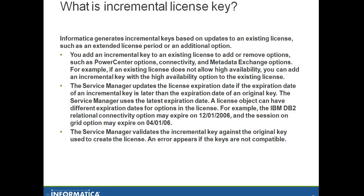The service manager updates the license expiration date. The expiration date of an incremental key is later than the expiration date of the original key, and the service manager uses the latest expiration date. A license object can have different expiration dates for options in the license. For example, the IBM DB2 relational connectivity option may expire on 12/01/2006 and the session on grid option may expire on 4/01/2006.